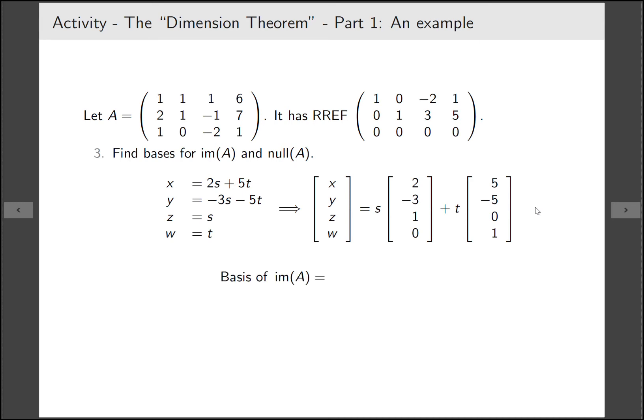What about the basis of the image space? This one's a little bit stranger. If you have the reduced row echelon form you look at the columns that contain a leading one. Then you go back over to your original matrix A and those columns will form the basis. So here column 1 and column 2 contain a leading one, so we take column 1 and column 2 from A and that forms our basis.